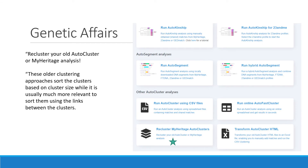One good thing is that you can use the Genetic Affairs website to recluster your MyHeritage matches to put them into a better sorting order. To do that, go to the Genetic Affairs website, log in, and scroll down to where it says 'recluster MyHeritage autoclusters.' You can also recluster your old Genetic Affairs autoclusters here as well if they were sorted by size instead of by super cluster. Genetic Affairs notes that older clustering approaches sort clusters based on cluster size, while it is usually much more relevant to sort them using the links between the clusters. A super cluster shows links between clusters, and that's why it's better.